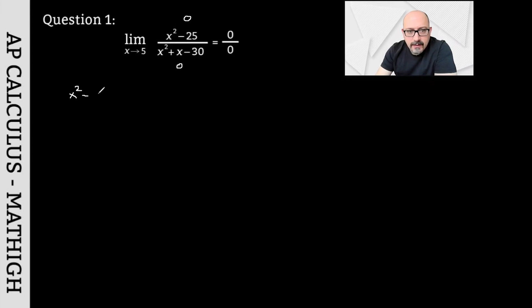The top part is x squared minus 25. I'm going to think of it as x squared minus 5 squared. From here, if we apply the difference of squares, we can factor it as (x-5) times (x+5).